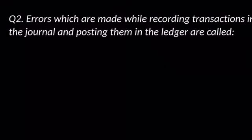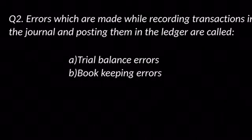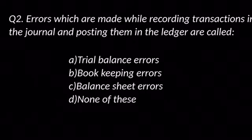Question number two: Errors which are made while recording transactions in the journal and posting them in the ledger are called — options are: A. Trial balance errors, B. Bookkeeping errors, C. Balance sheet errors, and D. None of these. The answer is B: Bookkeeping errors.